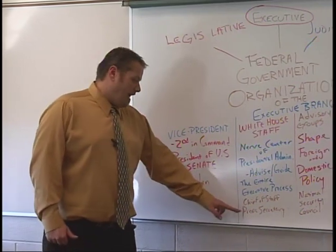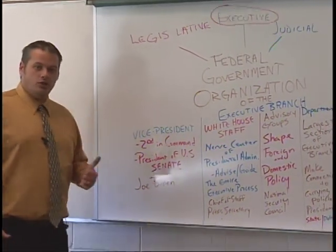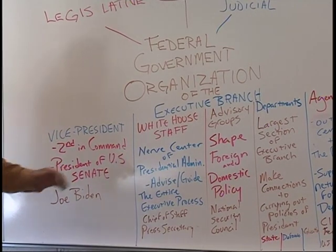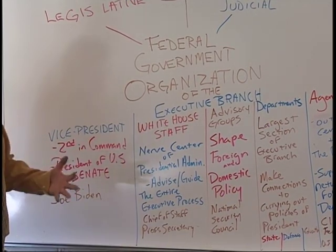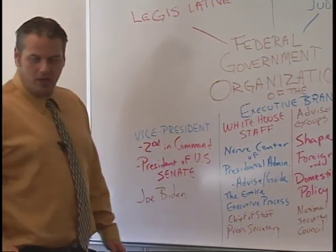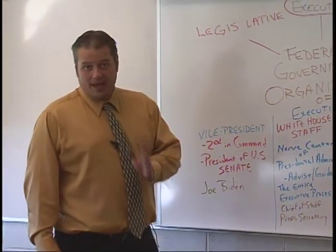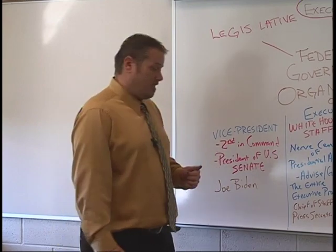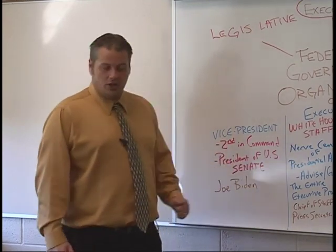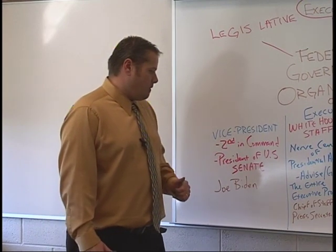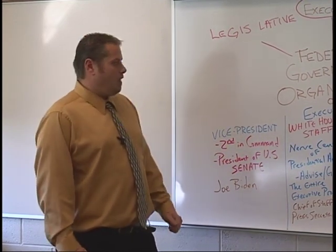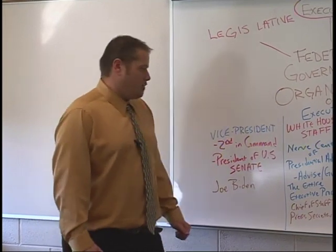The chief of staff and the press secretary are two examples of job titles within the White House staff. Typically, White House staff members stay with the president throughout their presidency. Oftentimes, after one term, because of the stress and nature of the job, they move on and the president will select a new member to that staff, replacing that member who steps down. But they oftentimes will carry out through an entire presidential administration.